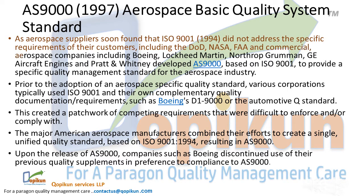Reason 1: Aerospace suppliers found that ISO 9001:1994 did not address the specific requirements of their customers, including the DoD, NASA, and commercial aerospace companies such as Boeing, Lockheed Martin, Northrop Grumman, GE Aircraft Engines, and Pratt & Whitney. These companies developed AS9000, based on ISO 9001, to provide a specific quality management standard for the aerospace industry. Reason 2: Prior to adoption of an aerospace-specific quality standard, various corporations typically used ISO 9001 with their own complementary quality documentation requirements, such as Boeing's D-19000 or the Automotive Q standard.